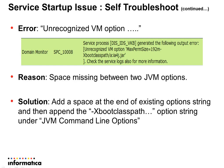Another error is 'unrecognized VM option' followed by an option string ending with XBootClassPath/a:IA4J.jar. The reason is that the option string was added without a space at the end of the previous option string in the JVM command option. The solution is to add a space between the XBootClassPath option and the previous option in the JVM command option.